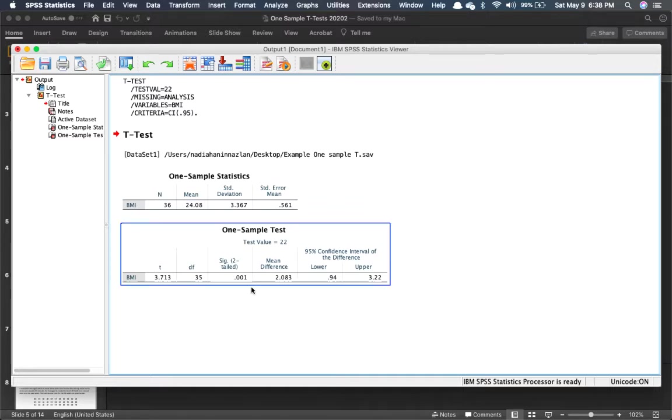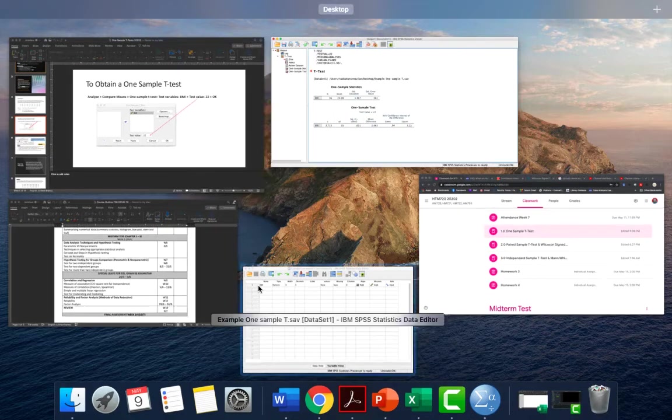As you can see over here, it is significant, so that means that we reject the null. So our null is that the hypothesized BMI is equal to 22, so that means it is not equal to 22.